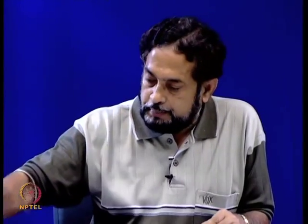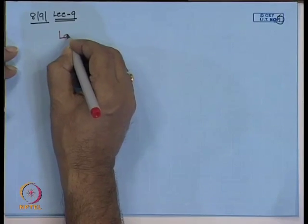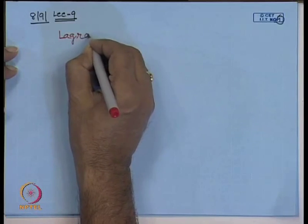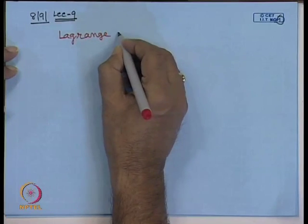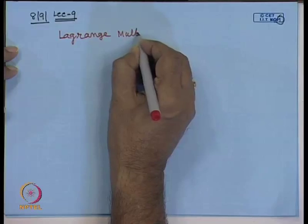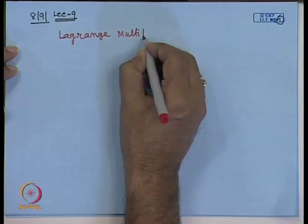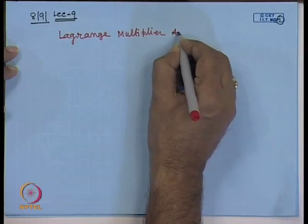This alternative approach is called the Lagrange multiplier approach.